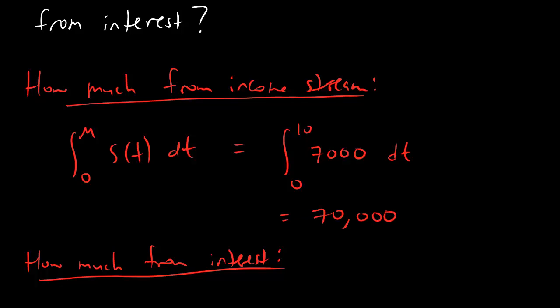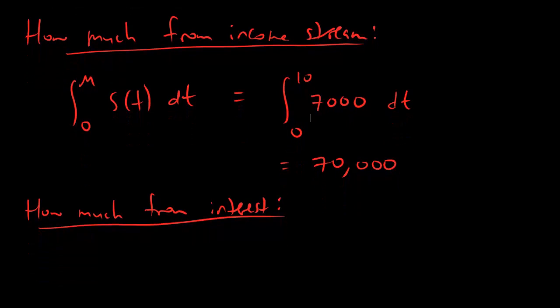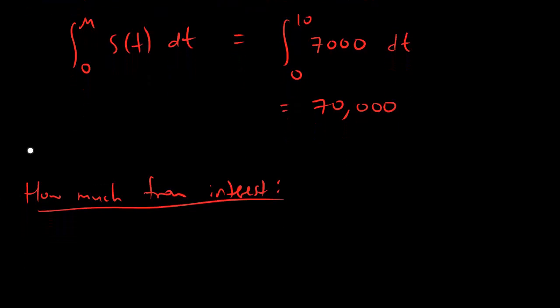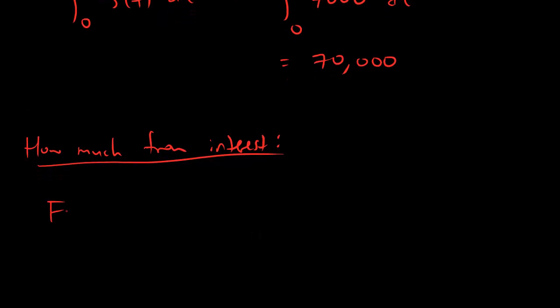That's because the integral of 7,000 is 7,000t, and plugging in the endpoints you're really just doing 7,000 times 10. That rule is always true as long as the income stream doesn't have any t's in it. If it does have t's, you have to use your calculator or do the integral by hand. So we use this formula to figure out how much money we get from the income stream alone, not counting interest. To find how much is from interest, it's total future value minus income stream.